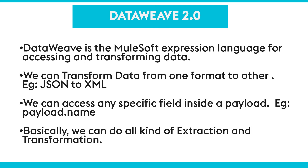We can access any specific field inside a payload using DataWeave. For example, whenever we are receiving a payload and if we want to access it, we access it using payload.name. That is also DataWeave language. Basically, we can do all kinds of extraction and transformation using it.